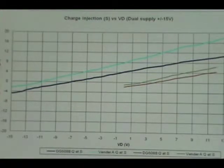The DG508B is the dark blue line. The competition is the light blue line. This is over a voltage range of plus or minus 15 volts. From 0 to 12 volts, the DG508 can be seen as the red line. The competition is the green line. All measurements are in picocoulombs.